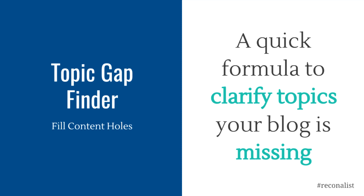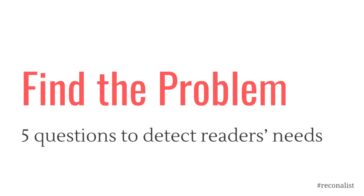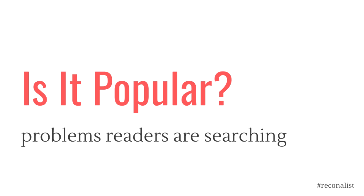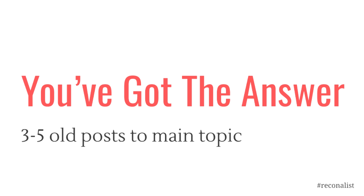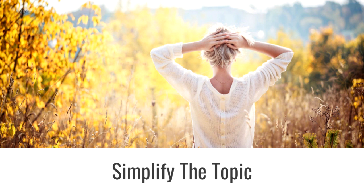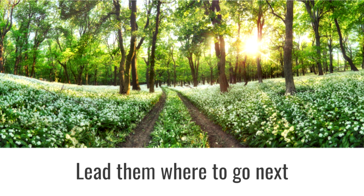What is a Topic Gap Finder? It's a quick formula to clarify topics your blog is missing. Here are the Topic Gap Finder steps. It starts by answering five questions from your reader's perspective. Creating a quick topic cluster of missing subtopics that solve your reader's problem in a logical order — problems your readers are searching for. Then picking a post which covers each of these topics and contains a lesson where you point out the problem. Then you link to the post on your site which solves that problem. When learning something new, people don't know what they don't know. When your reader can click over to answers before they have them, you make it simpler for her. By anticipating your reader's questions, you walk them down a logical path that gives them the confidence with incredible value.